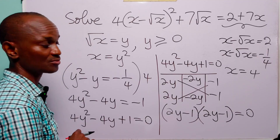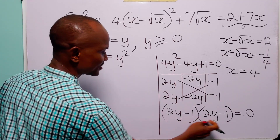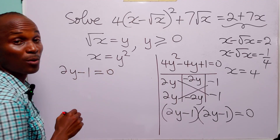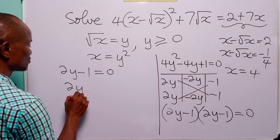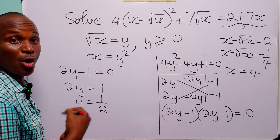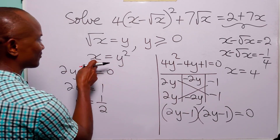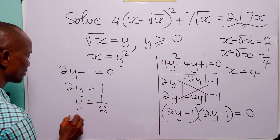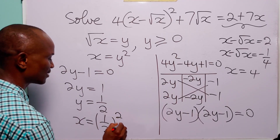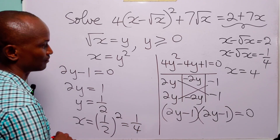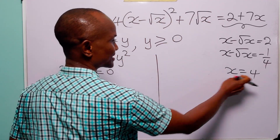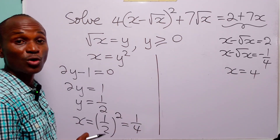And of course, this is equal to 0. Since these two factors are exactly the same, from here we have that 2y minus 1 is equal to 0. And of course, 2y is equal to 1, and y is equal to 1 over 2. Once more, from this equation we can find the value of x. So, we have that x is equal to y squared, that is 1 over 2 squared, which is equal to 1 over 4. So, finally, the two values of x that satisfy this equation are x equal to 4 and x equal to 1 over 4.